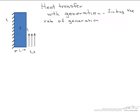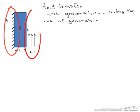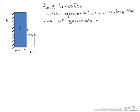In this screencast, we're going to find the rate of generation of heat in a wall that is insulated on one side and subjected to convection on the other. So our temperature distribution for this type of system is T of x equals Q dot, which we're looking for, over 2K.